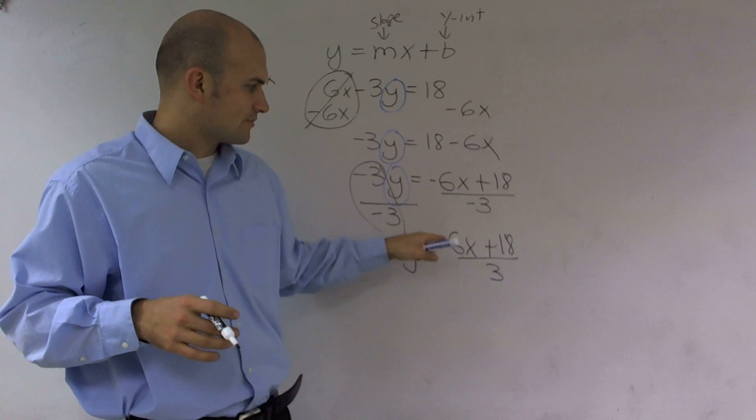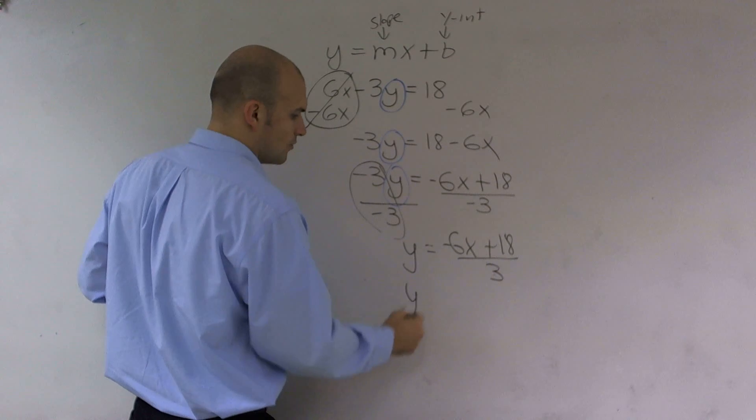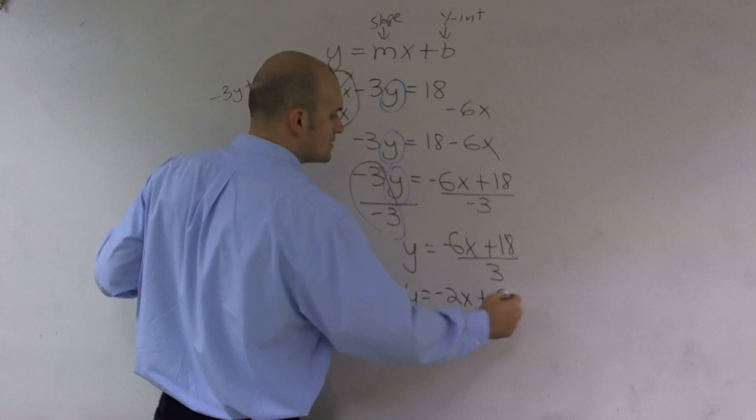I want to see if I can divide that 3 into both of these terms. So 3 goes into negative 6x, y equals negative 2x, and 3 goes into 18 six times.